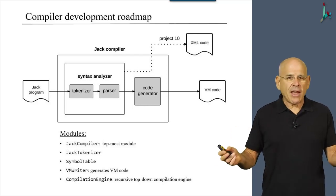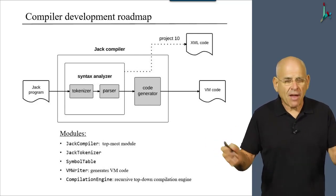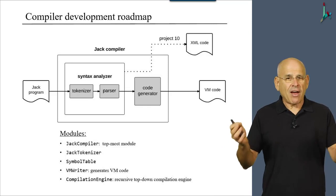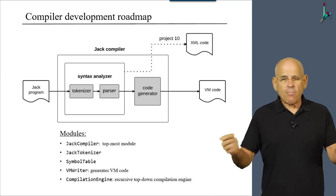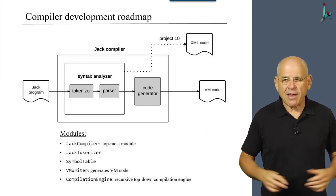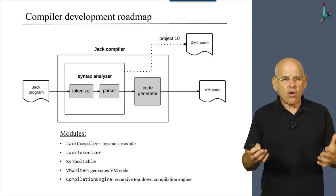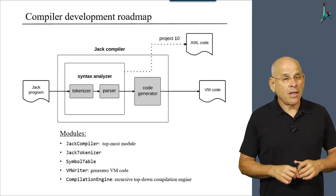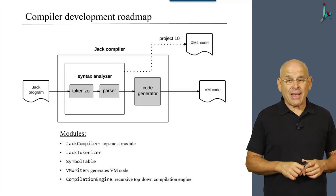If you write it in Java, it will be five Java classes. And the Jack compiler is sort of the main program, which is going to drive everything. Then we have a Jack tokenizer, symbol table, a VM writer, and a compilation engine.